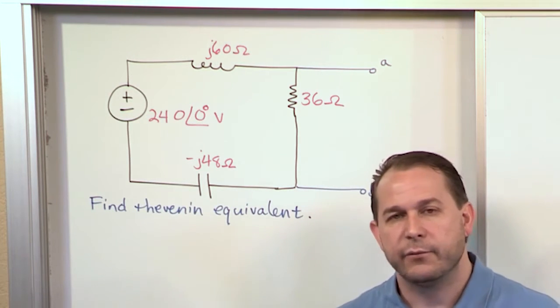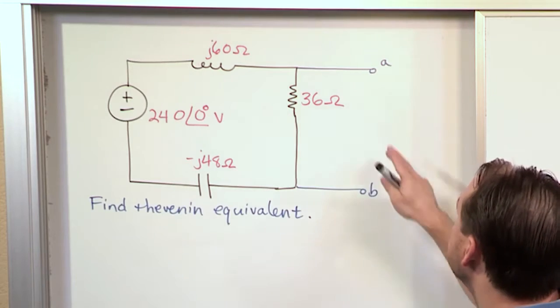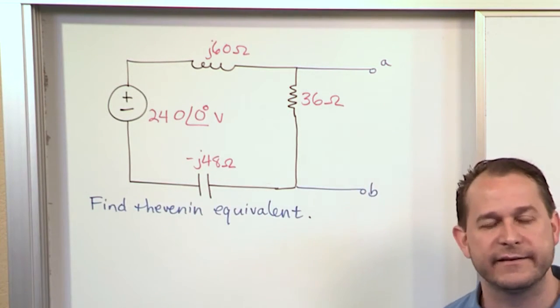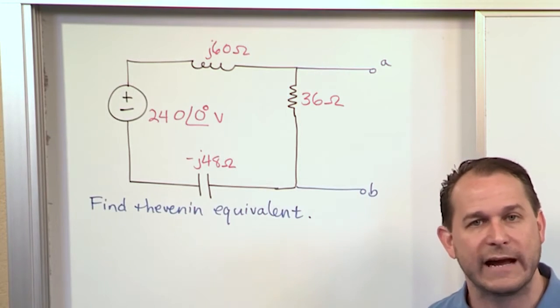And then once you have that, then between terminals A and B, what we have here will behave exactly the same as this Thevenin equivalent that we're going to calculate.